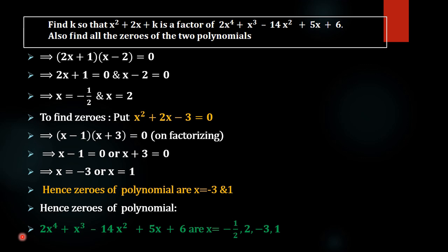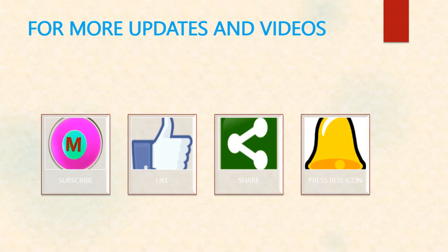Hence, by factorizing the polynomial into two factors and putting each equal to 0, we get all four zeros: from the first factor, x = -1/2 and x = 2; from the second factor, x = -3 and x = 1. So all zeros of the polynomial 2x⁴ + x³ - 14x² + 5x + 6 are x = -1/2, 2, -3, and 1. Thank you.